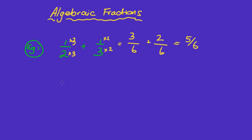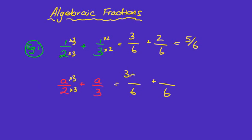Now we apply that to an algebraic question. Instead of one over two, we have a over two plus a over three. This is almost identical. We times the bottom and top of the first by three to get 3a, and the bottom and top of the second by two to get 2a, giving a final answer of 5a over six. The process is pretty much identical.